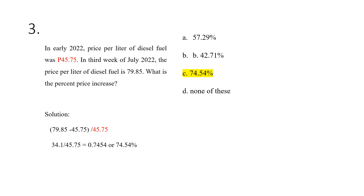For item three, the price of diesel increased from ₱45.75 to ₱79.85. Because we are accounting for the percent price increase, the base reference for this computation is the original price of ₱45.75. The price increase in value is 79.85 minus 45.75, which is 34.10, and dividing by the original price of 45.75 gives a final price increase percentage of 74.54%.